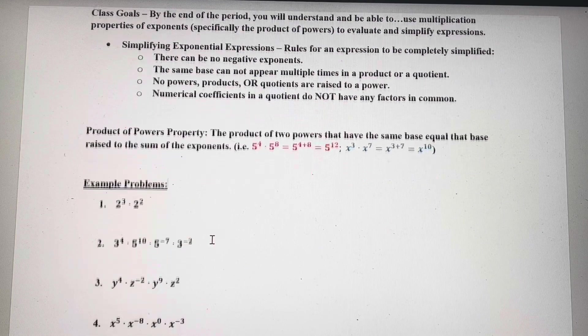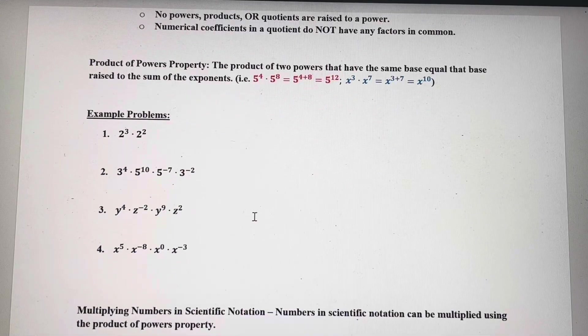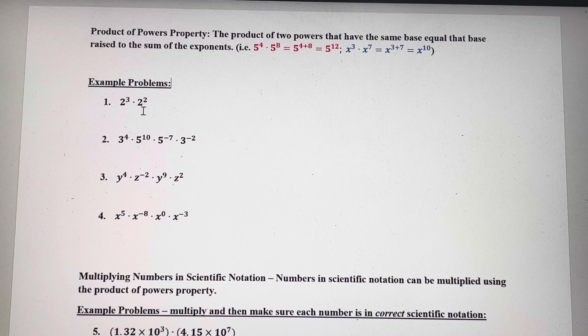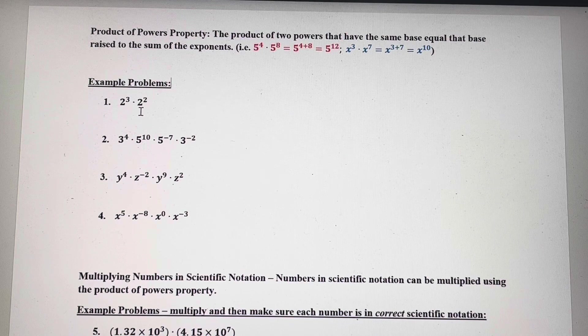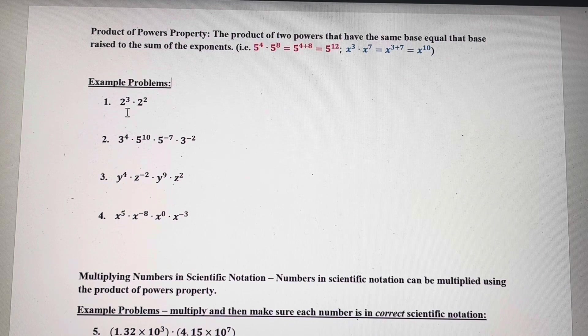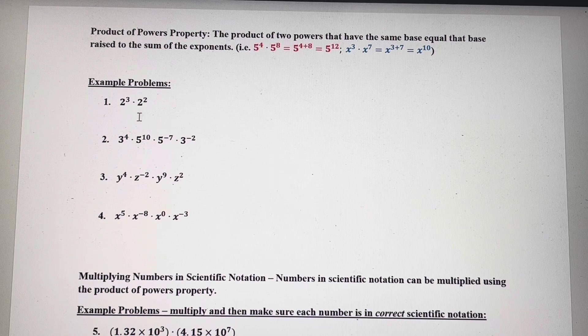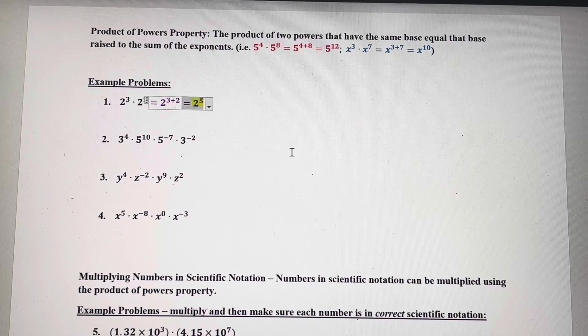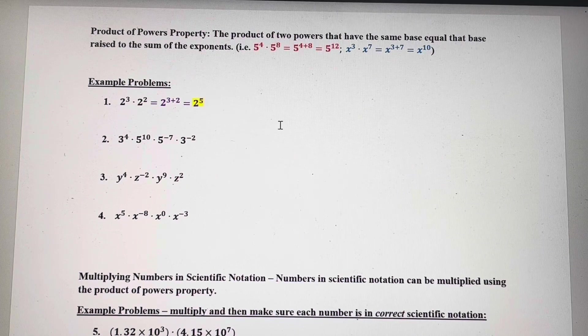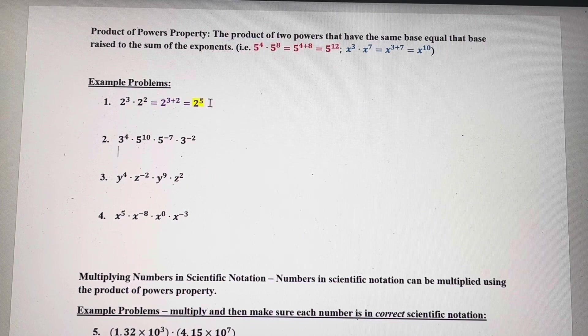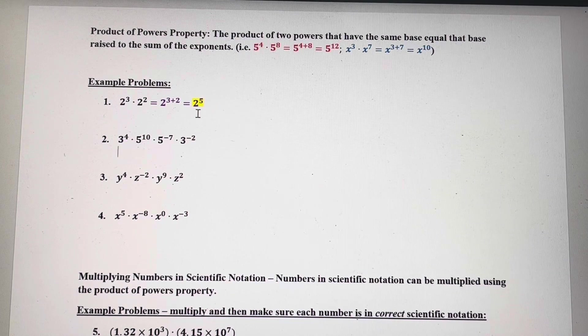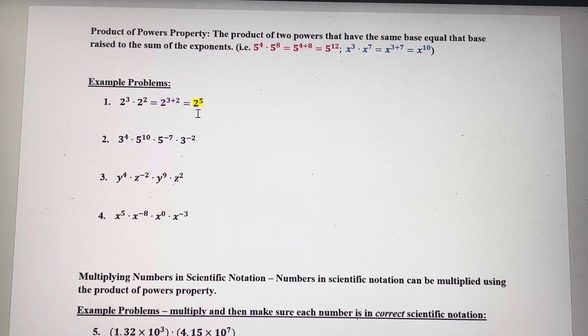So back to the product of powers. We've got some examples here. So notice we have a power here, 2 to the 3rd power, and we have another power, 2 squared, or 2 to the 2nd power. They have the same base. It's important to understand and notice that. They have the same base. So we've got 2 to the 3 plus 2, which is 2 to the 5th. We're going to stop there for now. We could evaluate that and say the answer is 32. But the purpose of this video is just to show how the exponents are dealt with.